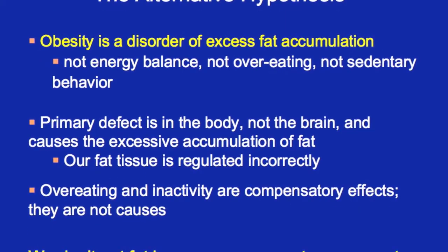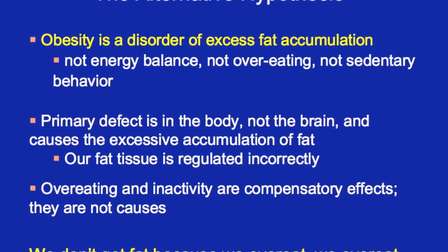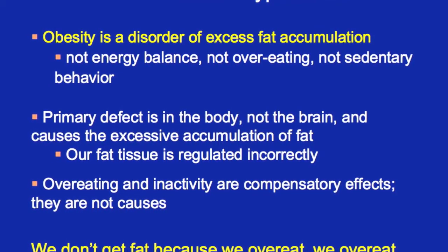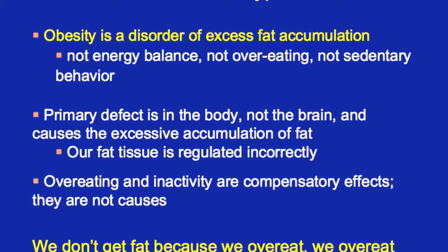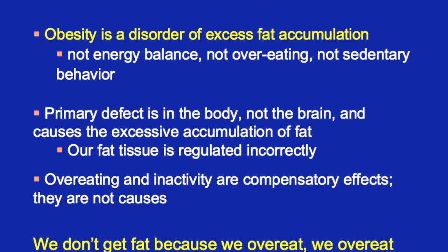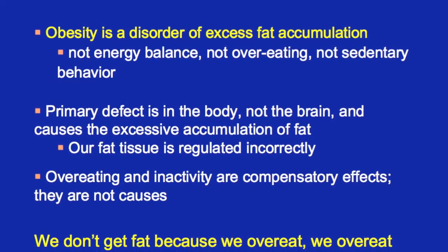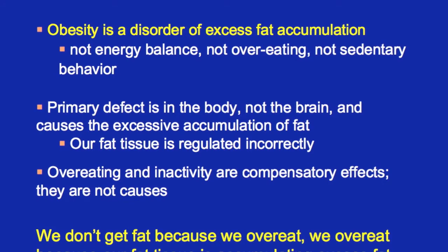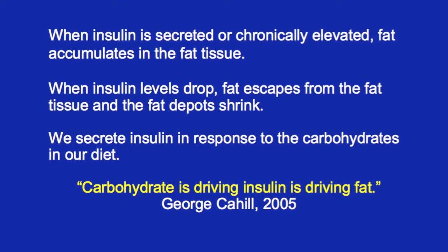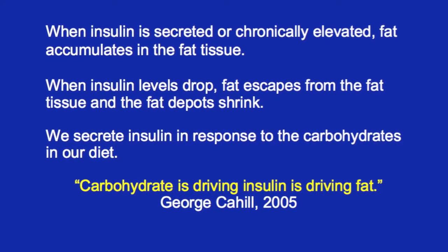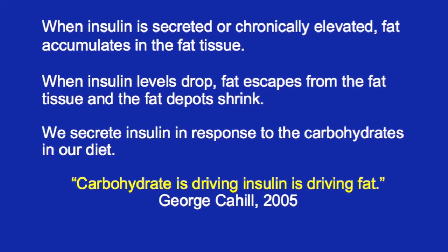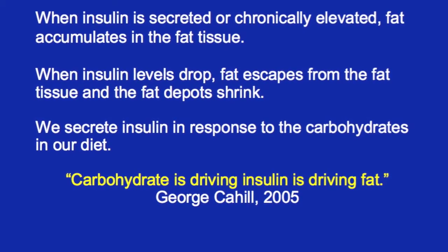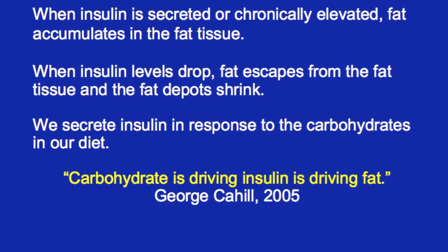The bottom line: when insulin is secreted or chronically elevated, fat accumulates in the fat tissue. When insulin levels drop, fat escapes from the fat tissue and the fat depots shrink. We secrete insulin in response to the carbohydrates in our diet — we secrete some in response to protein, but in a mixed meal comparing protein plus fat versus protein plus carbohydrates, it's carbohydrate that drives insulin secretion. As diabetes specialist George Cahill at Harvard summarized in 1965: carbohydrate is driving insulin, is driving fat.